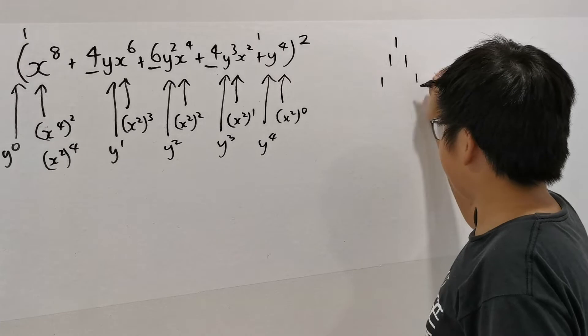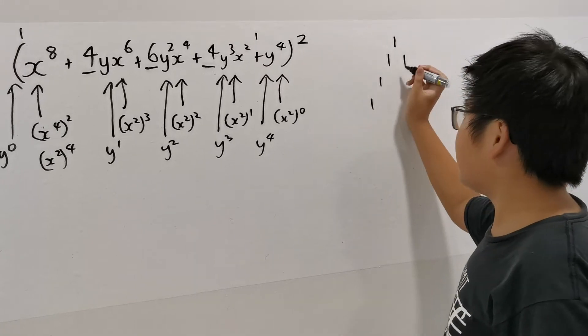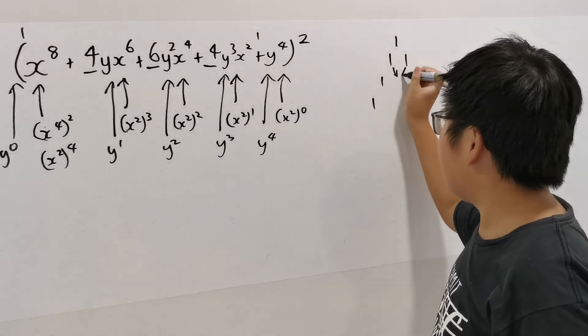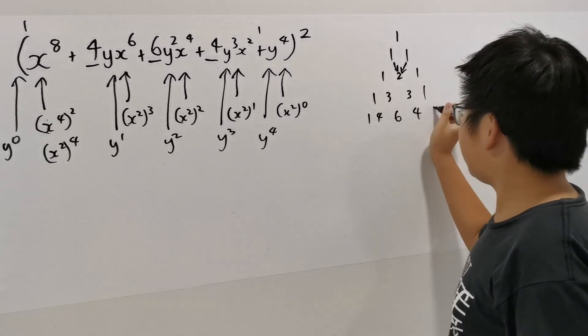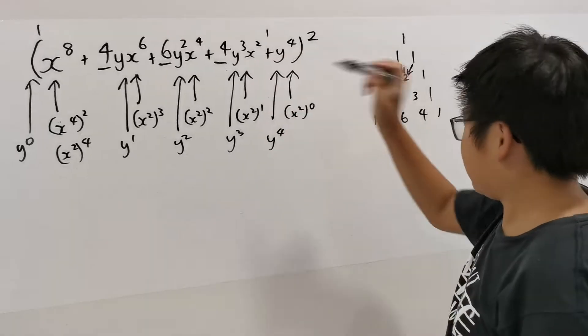So you start with a 1 at the top, and you have 1s on the sides. A number below is added by adding the 2 numbers above it. Let's stop here. Look, 1, 4, 6, 4, 1.